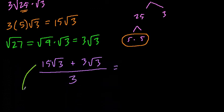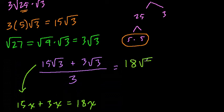I think of this almost like we have 15x plus 3x. That would be what? Well, that would be 15 groups of something plus 3 groups of something. We're adding these groups. We have 18 groups of something. Well, here you have 15 groups of radical 3 plus 3 groups of radical 3 would be 18 groups of radical 3 over 3.